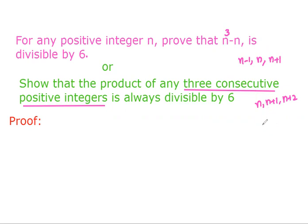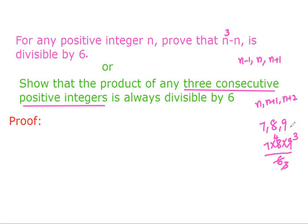The product of these numbers is 7 times 8 times 9. Let us verify — 7 into 8 into 9 gives a product divisible by 6.